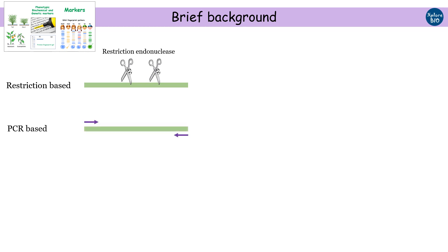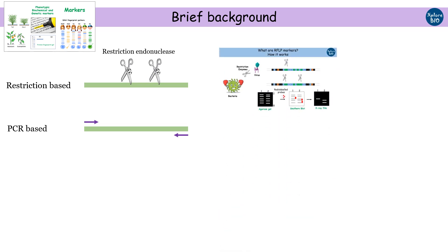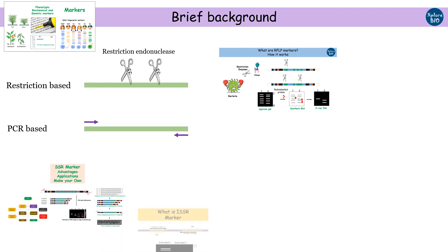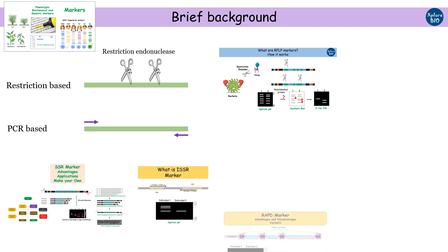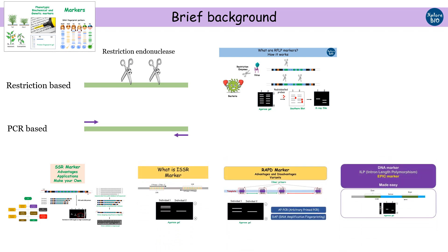The example of a restriction-based technique is the RFLP marker. In this, the DNA is restricted with specific restriction endonucleases, followed by hybridization with radiolabeled probes for detection of variation on the gels. PCR-based markers include SSRs, ISRs, RAPDs, ILPs, etc.